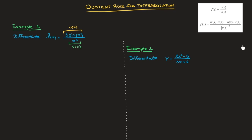Looking at the formula, it's quite clear that we're going to need the derivative of both u and v. Here's how I would suggest doing your working. First, clearly state that u of x equals 3 sine of x. Its derivative, u dash of x, is therefore equal to 3 cosine of x. And on the denominator, v of x equals x squared, and its derivative, v dash of x, is therefore equal to 2x.